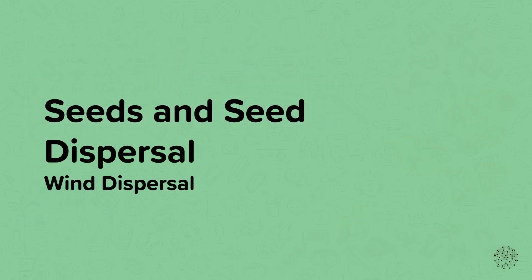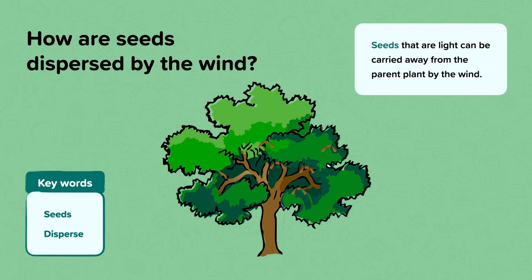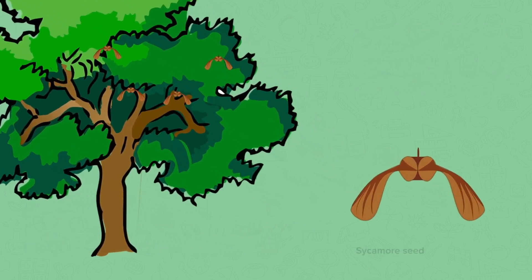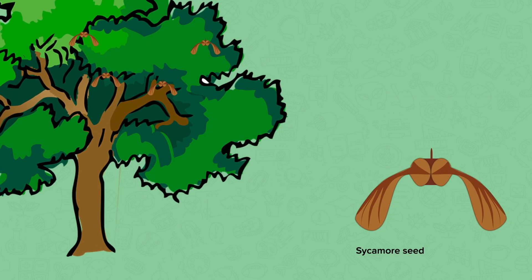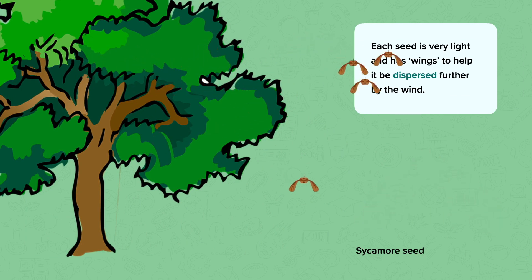Wind dispersal. Can you think of any plants that use wind to disperse their seeds? Seeds that are light can be carried away from the parent plant by the wind. Sycamore trees have special seeds that fly in the wind. This is a sycamore seed. Each seed is very light and has wings to help it be dispersed further by the wind.